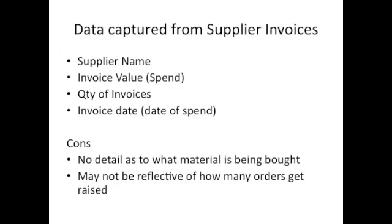The finance system primarily gives you the supplier name, the invoice value, and spend within the period. You can analyze the quantity of invoices and the transaction date. The drawbacks are that you won't get detail like part numbers or descriptions of what material is being bought, and you may not get a good idea of how many purchase orders have been raised.